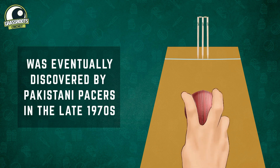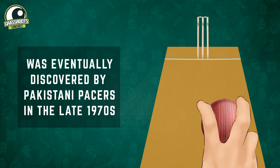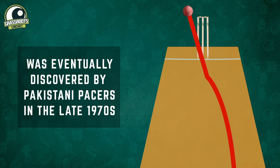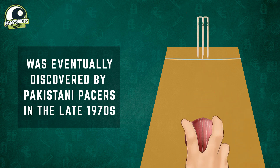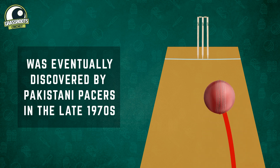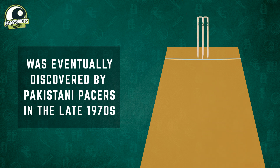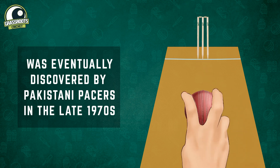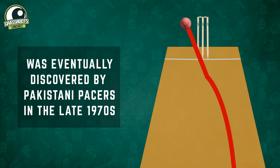Back in the day, with no speed guns at their disposal, bowlers would try to quantify their bowling speeds by observing the change in the ball's behavior in different situations. Therefore, by bowling at a certain speed under certain conditions and treating the ball in a certain way, reverse swing was incorporated into the base bowling arsenal.